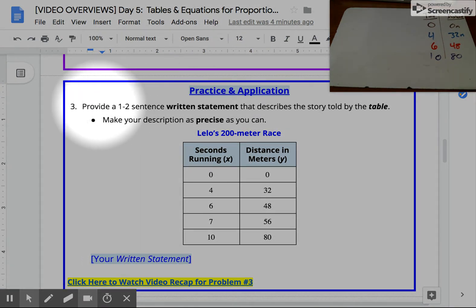For practice problem three, we're asked to provide a one or two sentence written statement that's going to describe the story told by this real-world data table. First thing I always do is read the title. It gives you a little idea, so this story is about a 200 meter race that Lilo's running in.